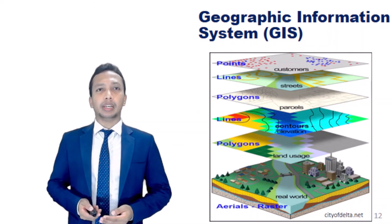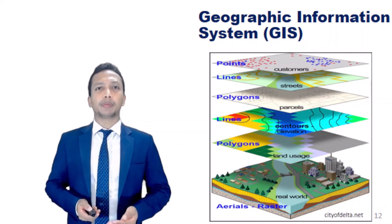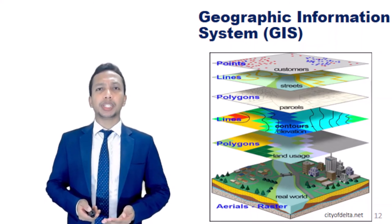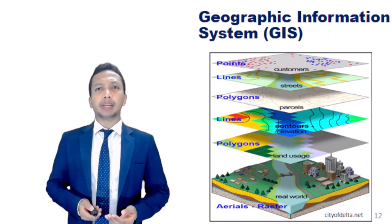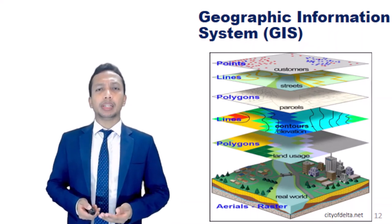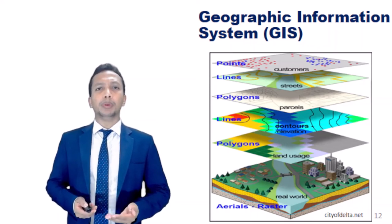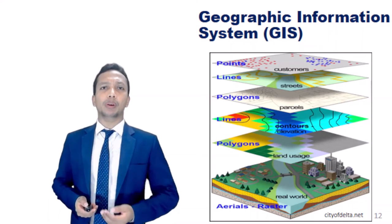GIS — a Geographic Information System — is a computer-based tool for mapping and analyzing geographic phenomena that exist on Earth. GIS provides the facilities for data capture, data management, data manipulation, and analysis, as well as the presentation of results in both graphic and report form.